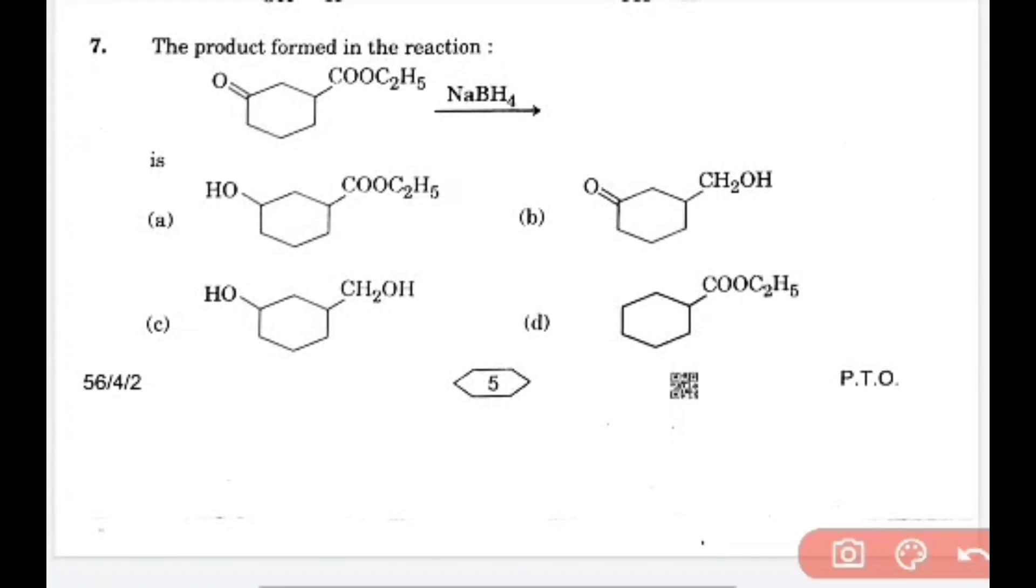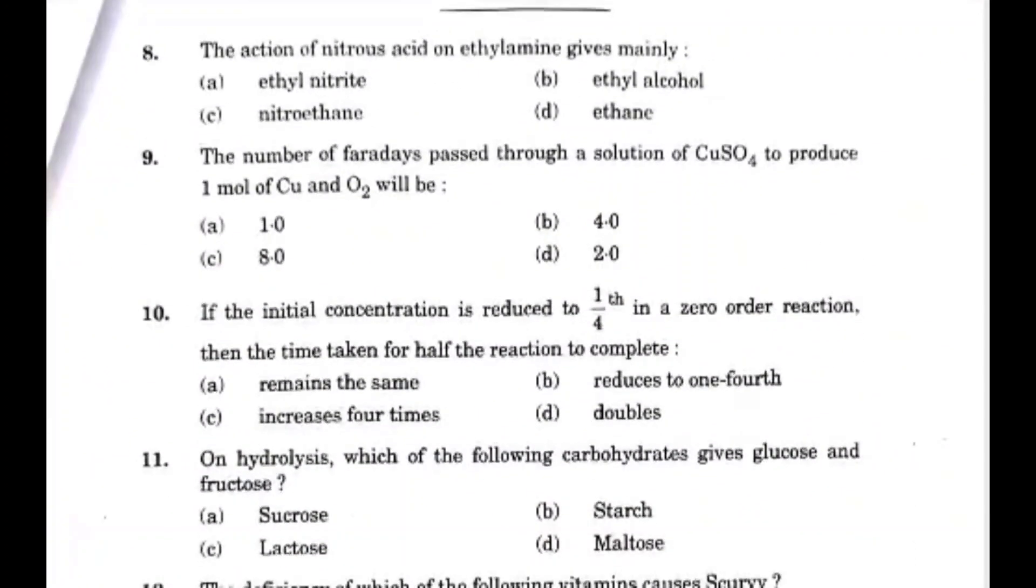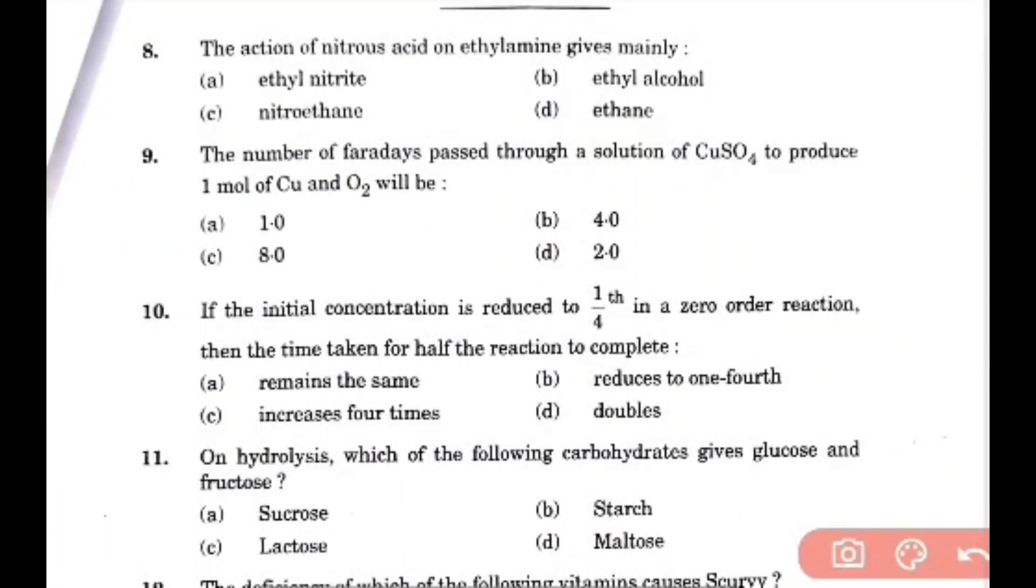Then, product formed in the reaction - here sodium borohydride is used, then it forms compound A. The action of nitrous acid on ethylamine gives mainly ethyl alcohol, option B.